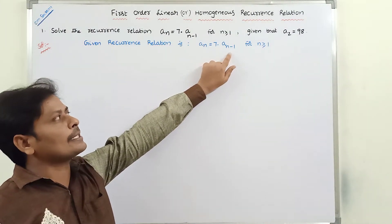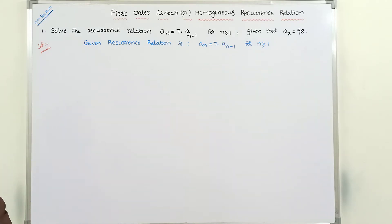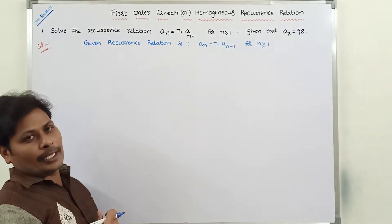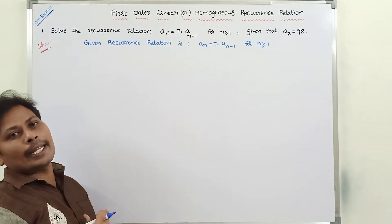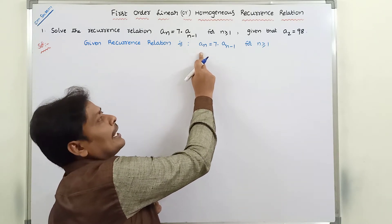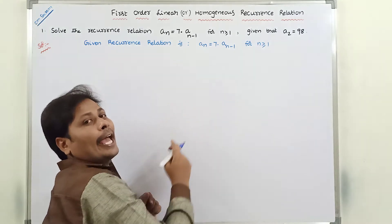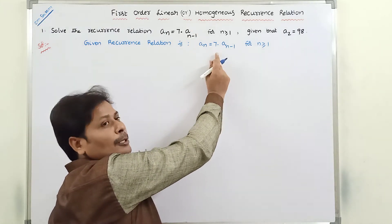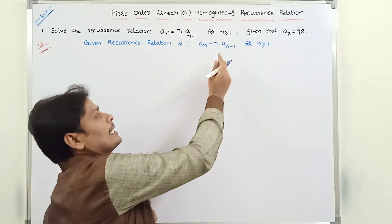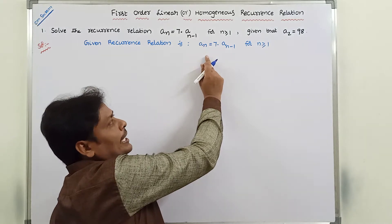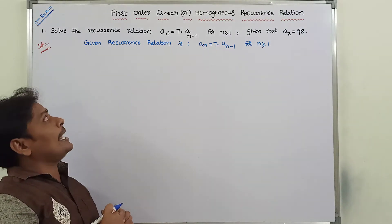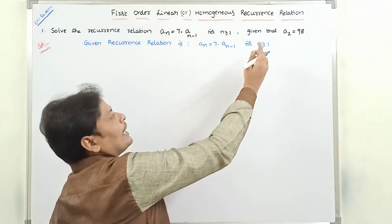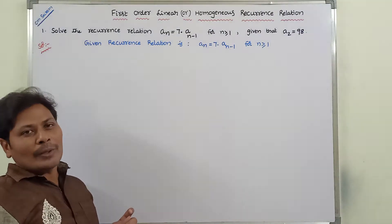The given recurrence relation is a_n = 7 · a_{n-1}, for n ≥ 1. First of all, this is a first order linear recurrence relation. How can we say that? The nth term can be defined in terms of only one previous term, that is the a_{n-1} term. So by using this condition we can say the given recurrence relation is a first order linear recurrence relation, with initial condition a_2 = 98.